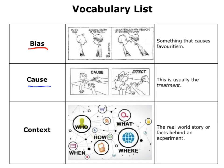Next one: cause. Cause is what happens — I do this, and something happens as a result. For example, as you can see in the little picture, giving the injection is the cause. The effect is that the little boy is crying. These are cause and effect, and when we're dealing with experiments, we'll come across this idea a lot more.